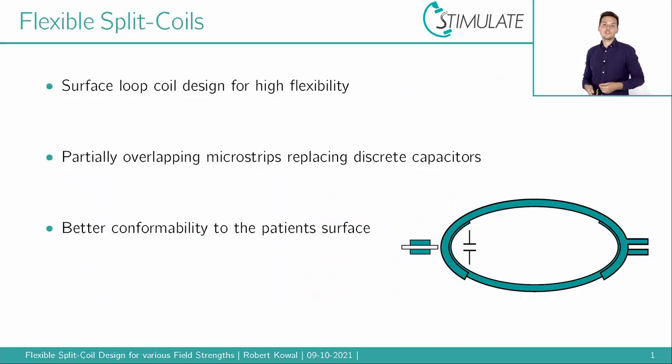The type of coils we work on are a special kind of loop coils with high flexibility in mind. Conventionally, loop coils may be built by copper wire or strips with discrete capacitors along their circumference. Split coils, in contrast, get rid of these discrete elements by partially overlapping microstrips. These can be used now for the tuning and or matching.